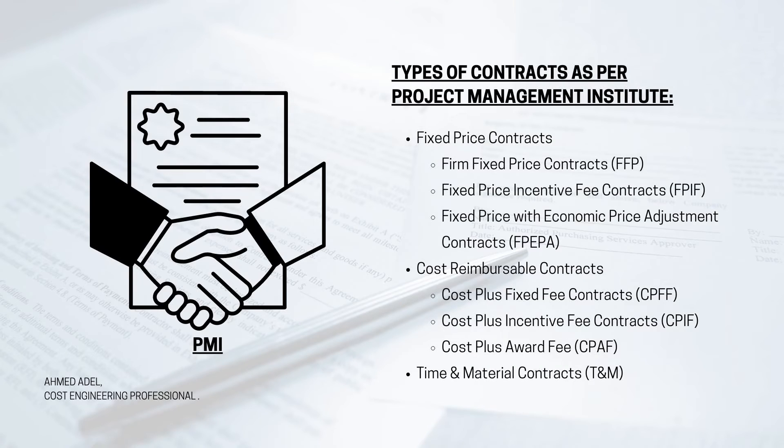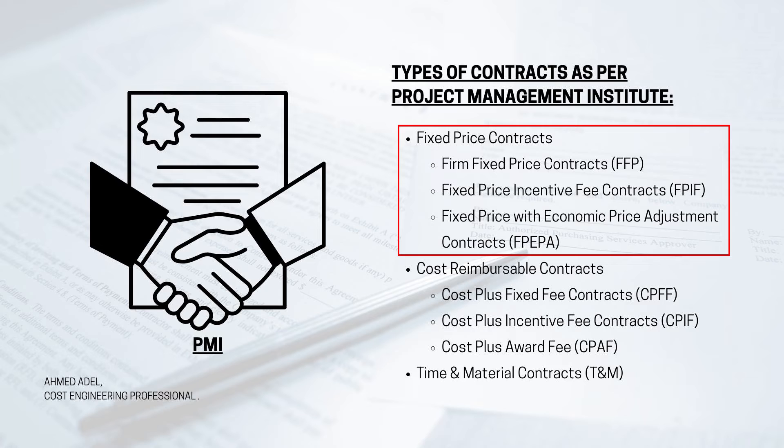Now, the types of contracts as per PMI. Under fixed price contracts, PMI identifies three subtypes: Firm Fixed Price (FFP), Fixed Price Incentive Fee (FPIF), and Fixed Price with Economic Price Adjustment (FP-EPA). The Firm Fixed Price contract is straightforward — a building at 40 million, and as long as there are no scope changes, the price stays at 40 million. The client is unaffected by changes in material prices like steel.